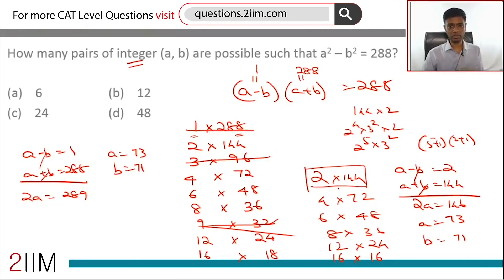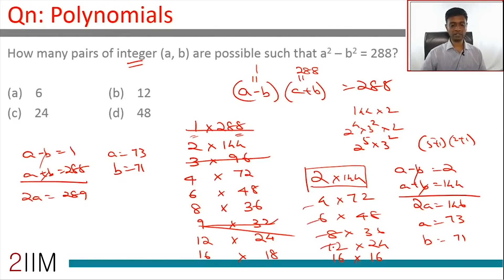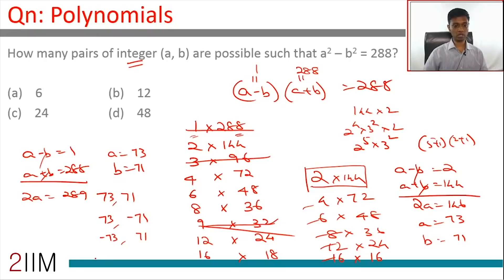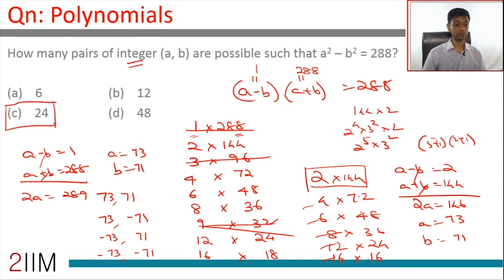Now let's extrapolate to integers. For the pair (73, 71), all of (73, 71), (73, −71), (−73, 71), and (−73, −71) satisfy a² − b² = 288. So each natural number solution gives four integer solutions. Since there are six valid pairs of natural numbers, we get 6 × 4 = 24 pairs of integers.